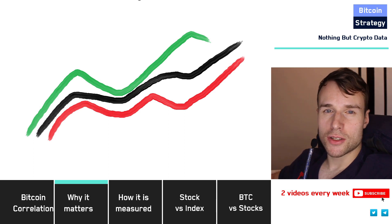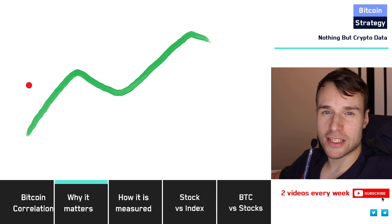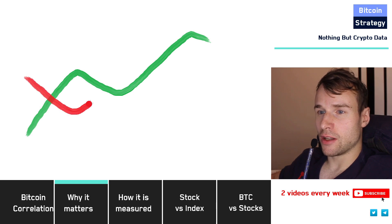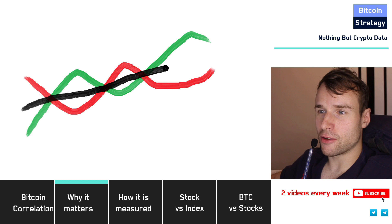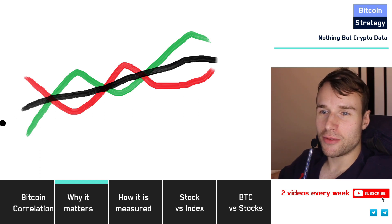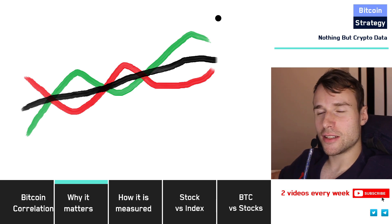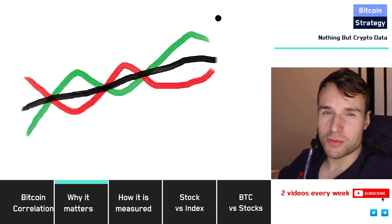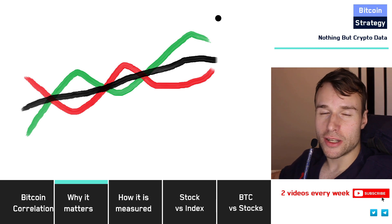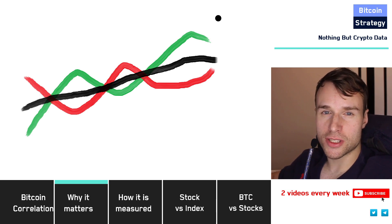But what if our assets were not that much correlated? Let's assume our second asset has a negative correlation to the first asset. So when asset one goes up, asset two goes down and the other way around. If you combine a portfolio out of those two assets, you get something that looks way less volatile — a very steady increase. When building a portfolio, you want as little correlation, or possibly even negative correlation, to your existing assets, because then you can reduce the overall portfolio volatility.